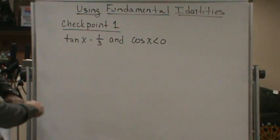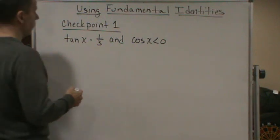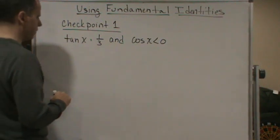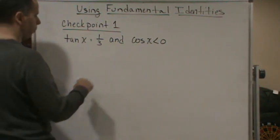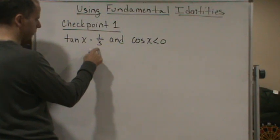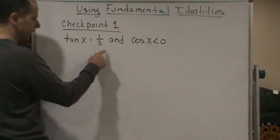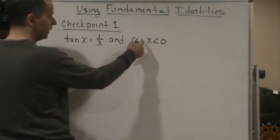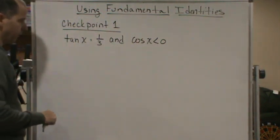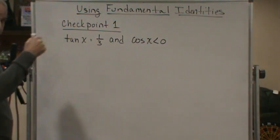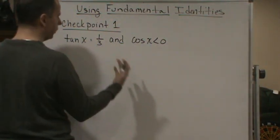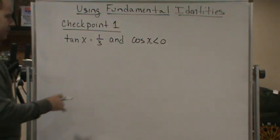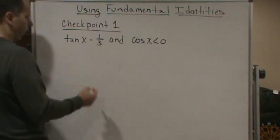All right, let's get started. We've got these two pieces of information. Tangent is positive — it's one-third — and cosine is negative. Cosine is negative in the second and third quadrants. Tangent is positive in the first and third quadrants. So we know we are in the third quadrant.